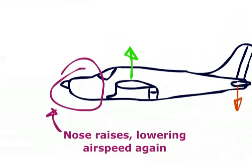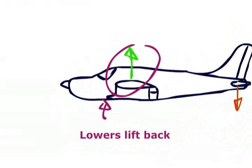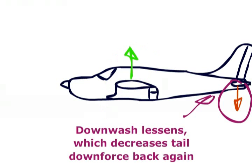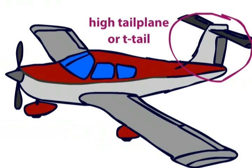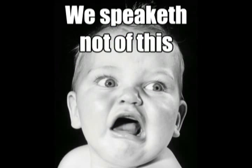The nose raises, lowering airspeed and lift, and like before, the aircraft will oscillate back onto its old flight path. Obviously, if the aircraft is a T-tail, then all that is slightly different, but I won't go into that.